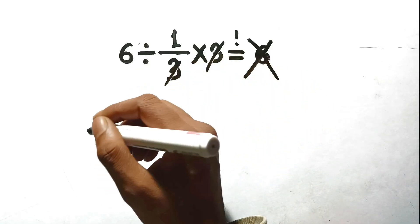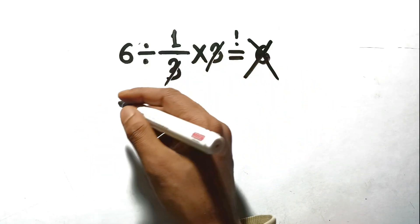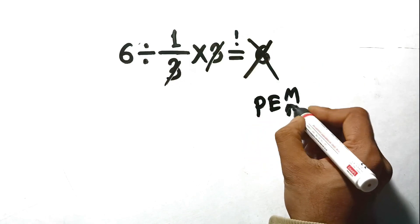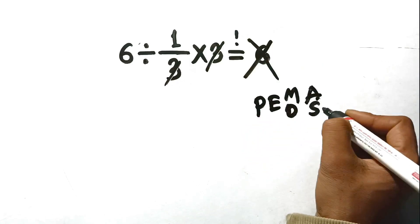It feels like a clever shortcut, but it is actually a total violation of the rules. The problem here is how we treat the order of operations when fractions and multiplication are mixed together.